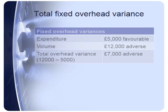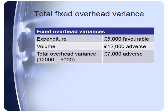Finally, I can combine those expenditure and volume variances to give the total overhead variance. We have a £5,000 favourable variance in terms of expenditure and a £12,000 adverse variance in respect to volume. So overall, we have a total overhead variance of £7,000 adverse.